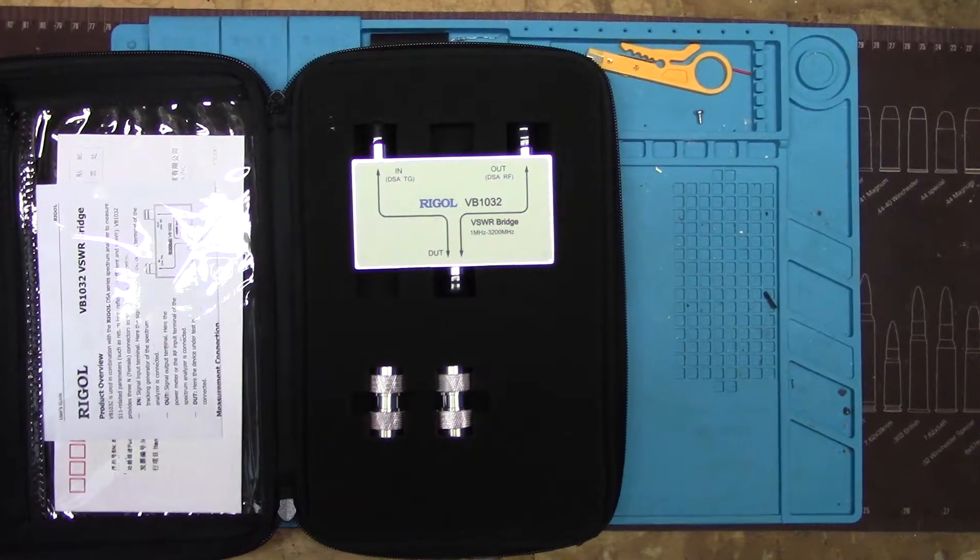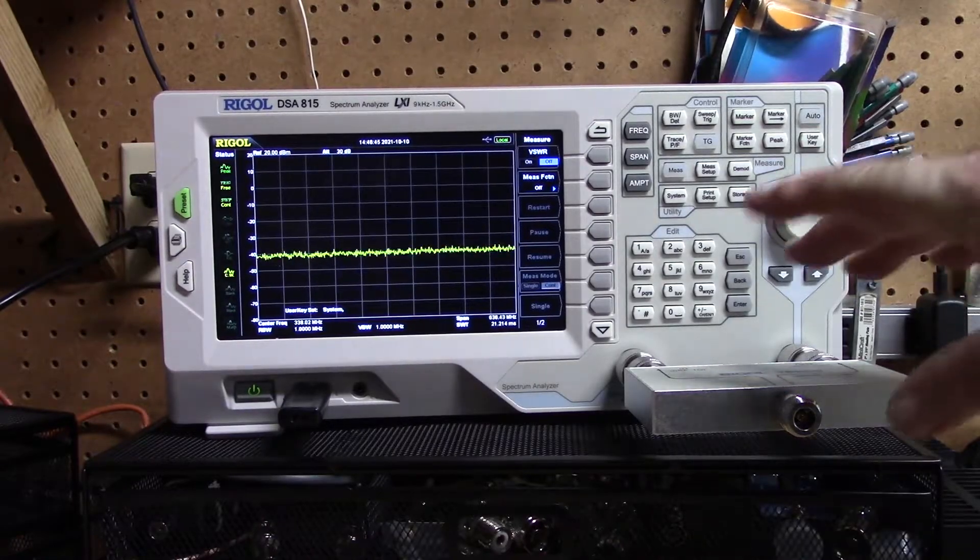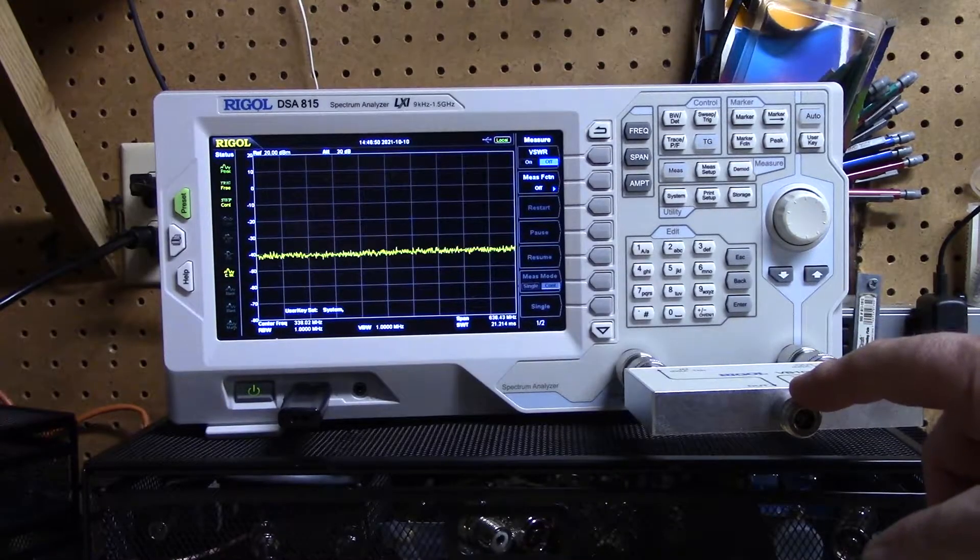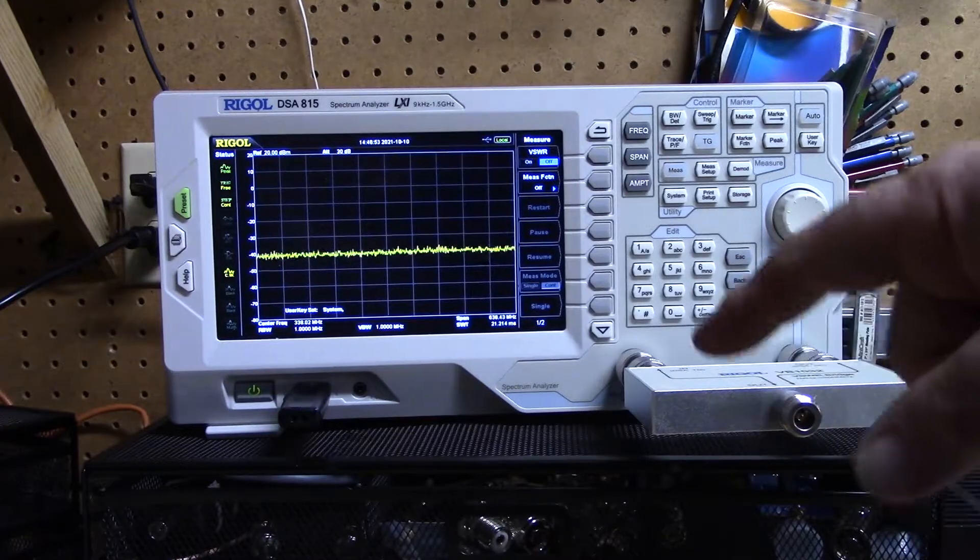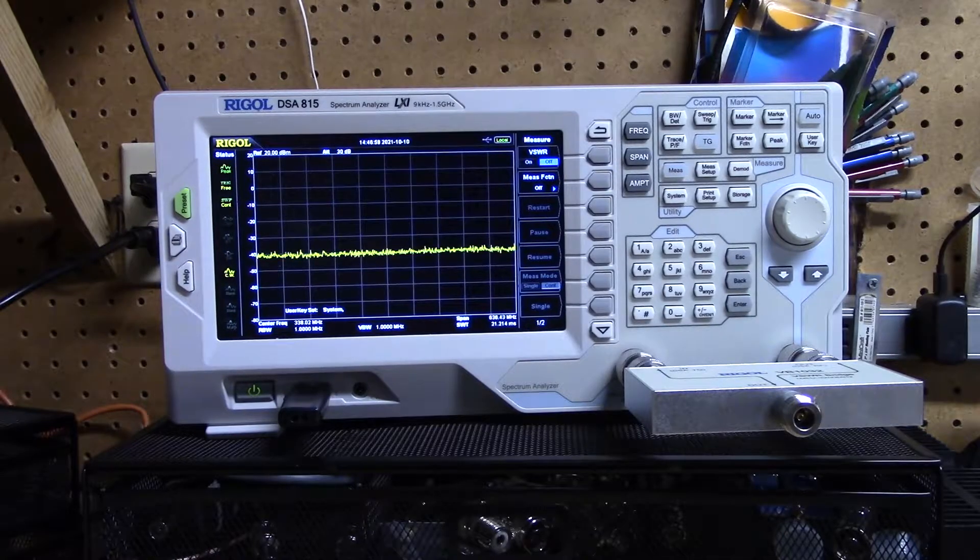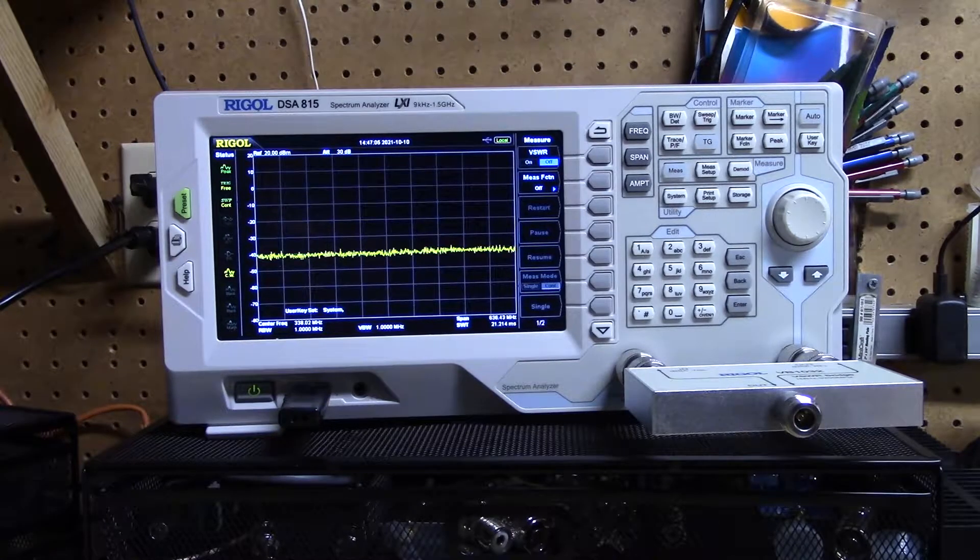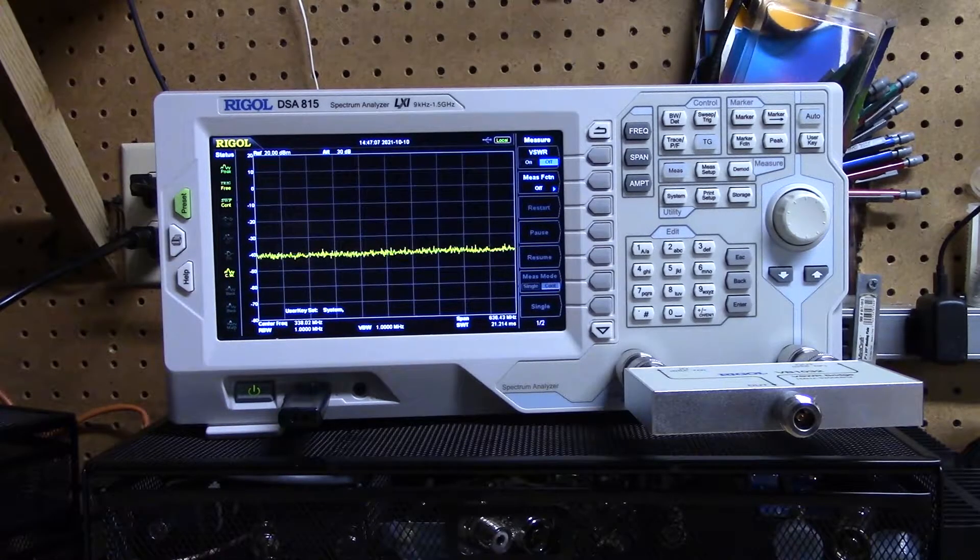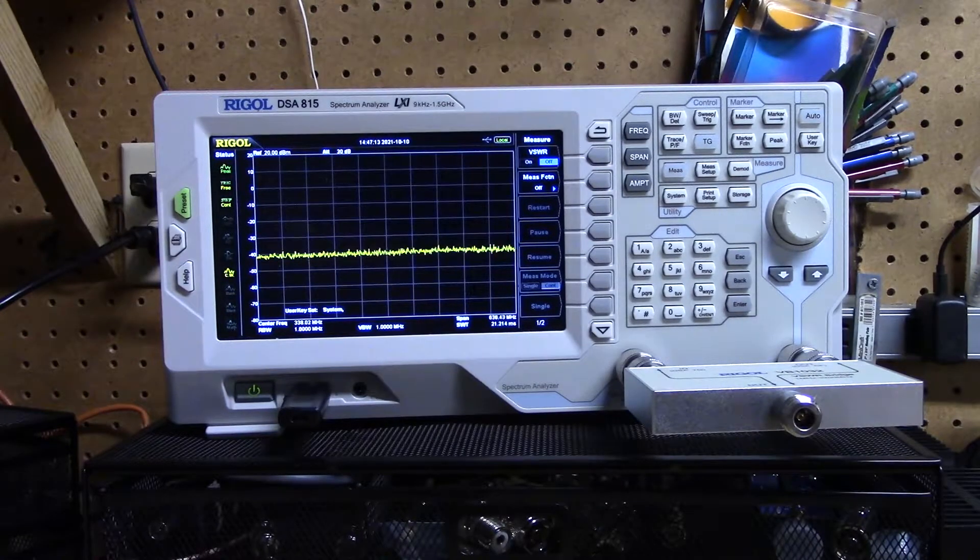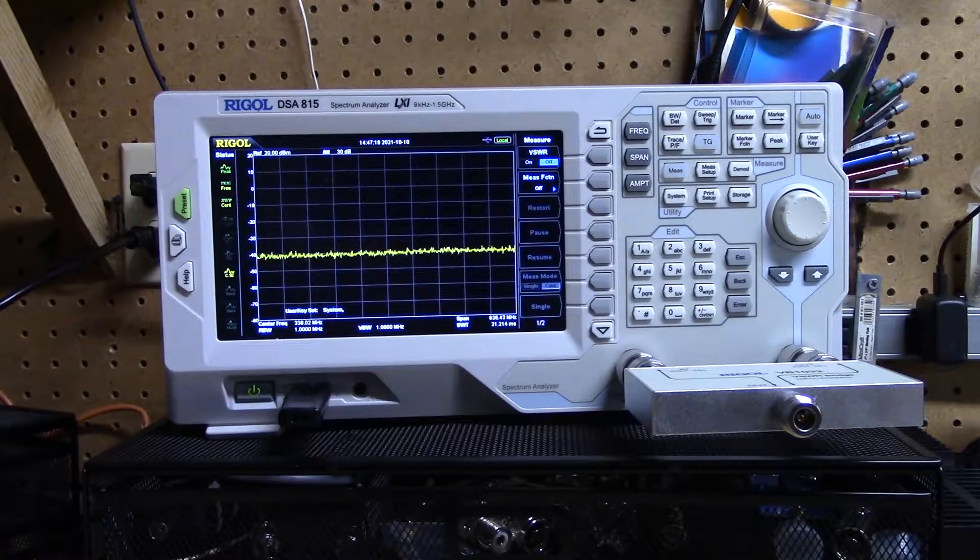I've got the SWR bridge hooked up to the spectrum analyzer. It's open, we will have to do a calibration before we start doing any testing. I'm going to walk through quickly the steps we have to do to make our measurements. I have a generic 2 meter antenna in my stash of random things, so that's what we're going to test with. This test could use an HF antenna, 2 meter, 440, whatever is within the range of our SWR bridge.